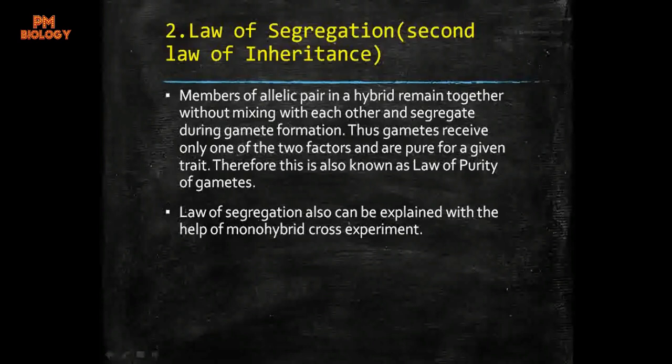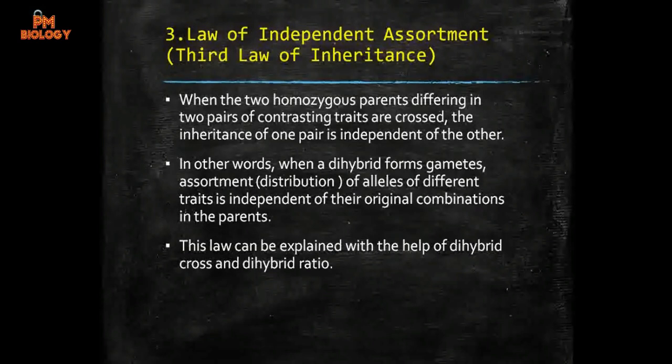Now let's move to the next law — the law of independent assortment, which is the third law of inheritance. When two homozygous parents differing in two pairs of contrasting traits are crossed, the inheritance of one pair is independent of the other. In other words, when a dihybrid forms gametes, assortment of alleles of different traits is independent of their original combinations in the parents.